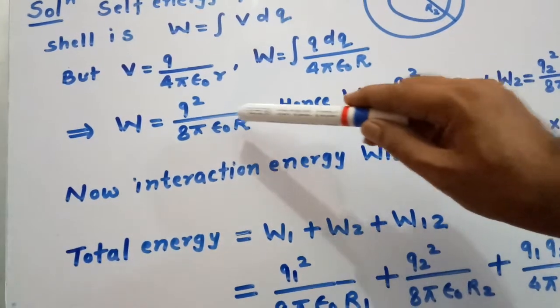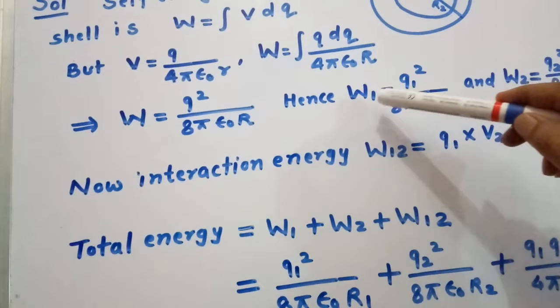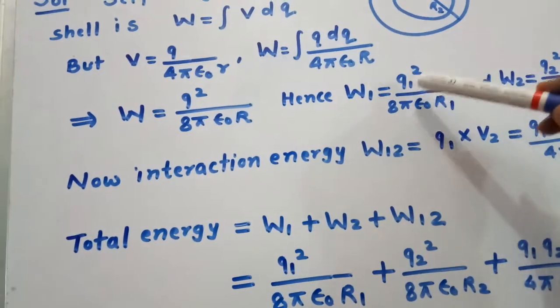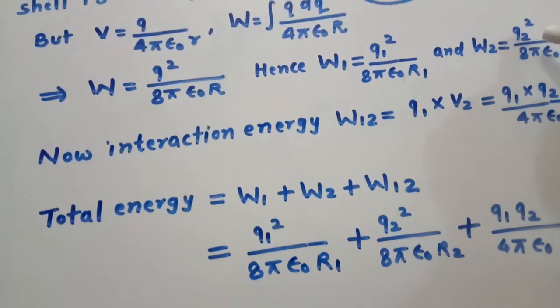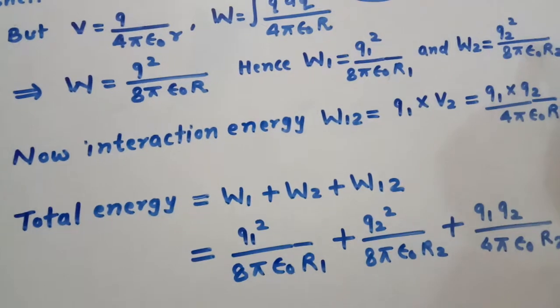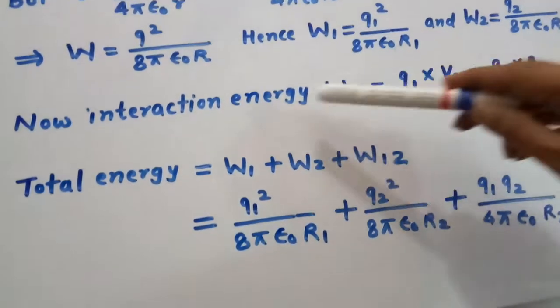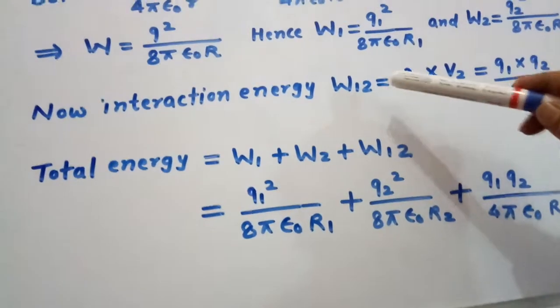Now we generalize this relation for both shells. So w1 equals q1 squared divided by 8π epsilon naught r1, and w2 equals q2 squared divided by 8π epsilon naught r2.